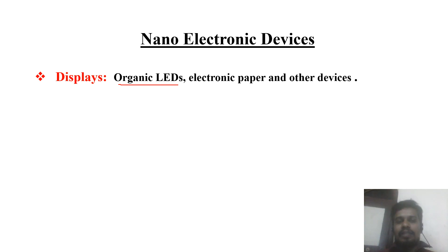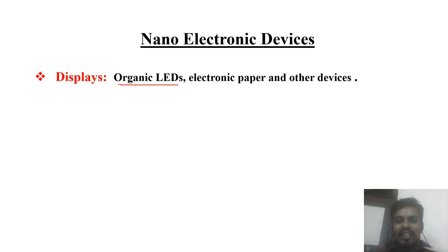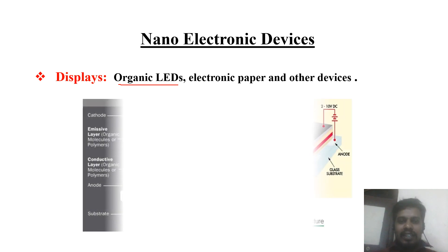The Samsung company is making organic LED TVs, as well as LG and many other TV companies like Thompson. LED means light-emitting diode. In this kind of display we are using nano-electronic devices, and I want to show the simple working of these nano-electronic devices and how they act as a display.